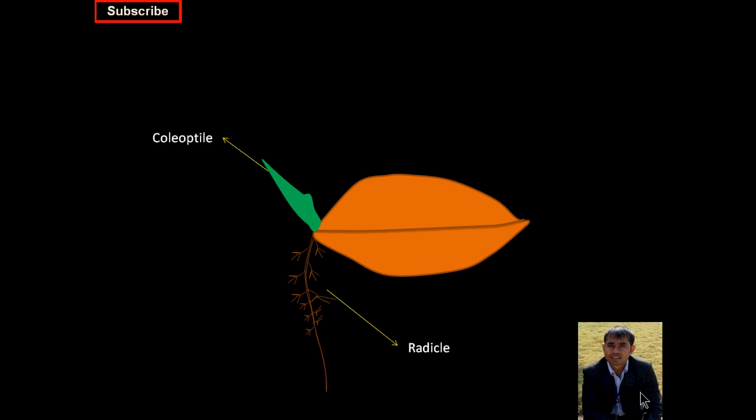The case is different when we sow the seed in a submerged condition. In that case, the coleoptile will emerge first, then the coleorhiza, and then followed by the radicle.